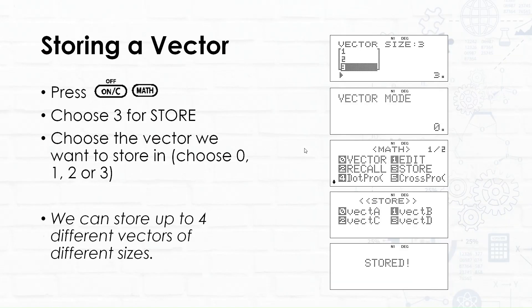Now that we've edited our vector, we need to be able to store that so we can work with it in further calculations. To store the vector, I know it sounds counterintuitive, but we're going to press on first. Then we're going to press math and choose 3 to store our vector. We're going to choose a vector to store it in. We have four different vectors that we can save our vector into, or vector names. Let's do that now.